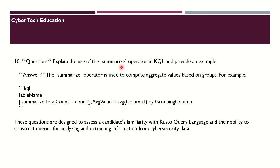Finally, explain the use of the summarize operator in KQL and provide an example. The summarize operator is used to compute aggregate values based on groups. For example: TableName | summarize TotalCount = count(), AverageValue = avg(Column1) by GroupingColumn.